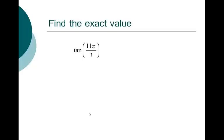Tangent of 11 pi over 3: 11 pi over 3 minus 2 pi is 5 pi over 3, so 11 pi over 3 is coterminal with 5 pi over 3 — they share a terminal side and have the same sine, cosine, and tangent. The reference angle is pi over 3. The tangent of pi over 3 is square root of 3. Since 5 pi over 3 is in quadrant 4 and tangent is negative there, the tangent of 11 pi over 3 is negative square root of 3.